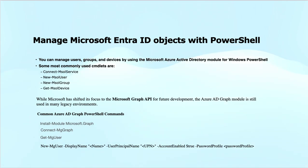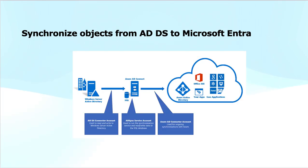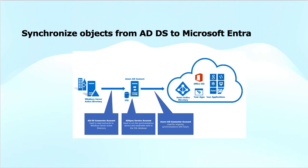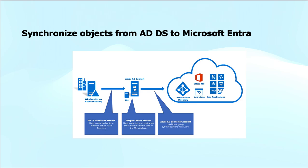In the upcoming video you will see the management of these identities and synchronization from on-premises to Entra ID. When we have an on-premises directory, we use the Entra ID Connect tool or the Entra Cloud Sync lightweight tool to synchronize identities to Microsoft Entra ID. This way users get easy access to both cloud applications and on-premises resources using a single account, with options for password hash synchronization or federation.